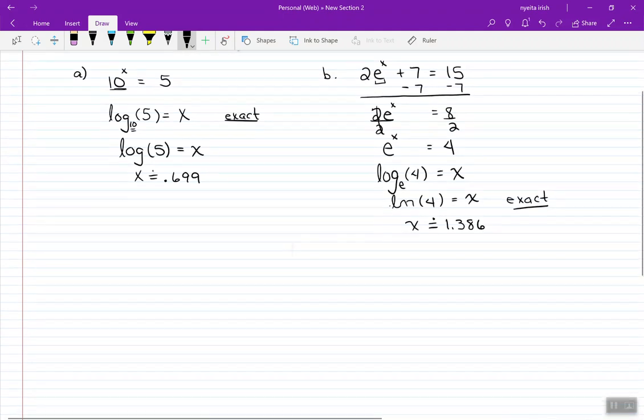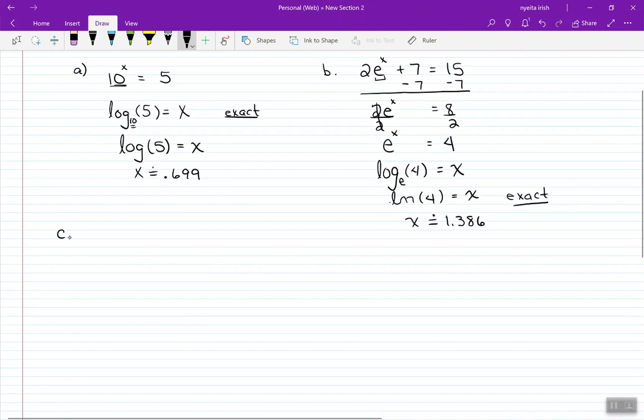For letter C, this one's a little bit different. It's 12 plus log base 4 of x equals 15. Once again, I'm trying to get the variable by itself. If I can add or subtract something away from that term, I'll want to do so. In this case, you can subtract 12 from both sides of the equation. So I have log base 4 of x equals 3.